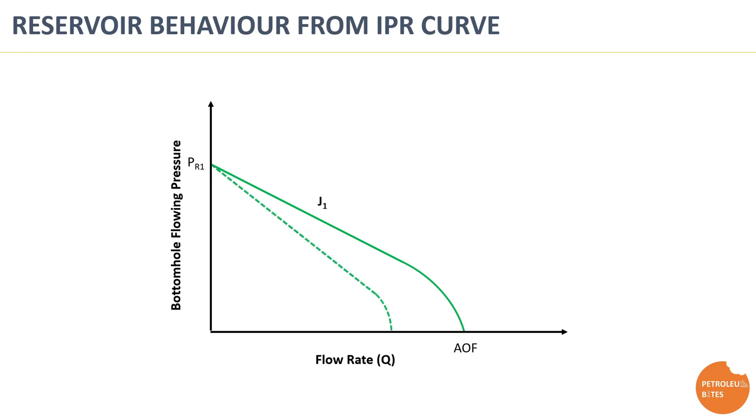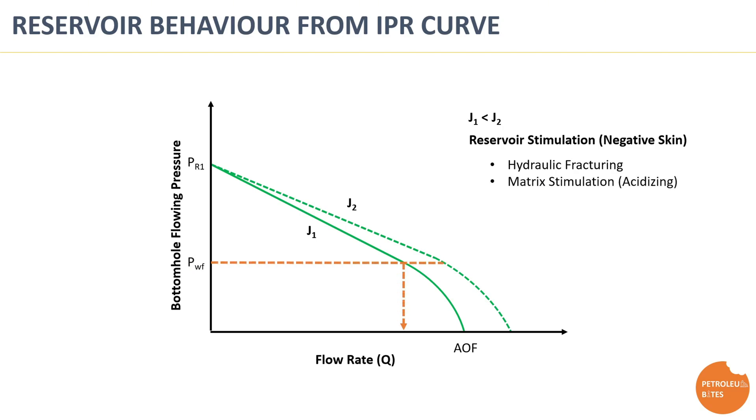Sometimes the drop in the flow rate is not a result of depletion but is caused by a deterioration in Productivity Index that happens when formation is damaged either naturally or induced from external source. Also, Productivity Index can be improved by performing any of the stimulation techniques like hydraulic fracturing or matrix stimulation. These techniques help improve flow rate at the same bottom hole flowing pressure.